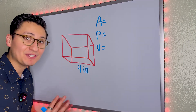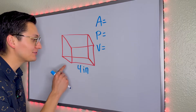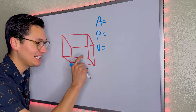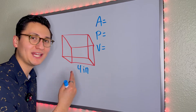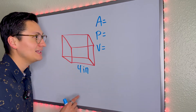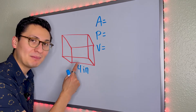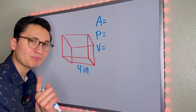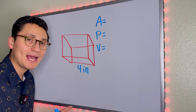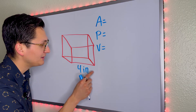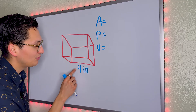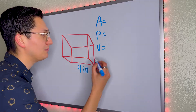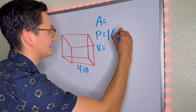Now we have a cube, and the cube has all equal sides. So if this side is 4 inches, everything else also measures 4 inches. Let's find the area, the perimeter, and the volume. Starting with perimeter: we add all sides of the base — 4, 8, 12, 16. The perimeter is 16 inches.